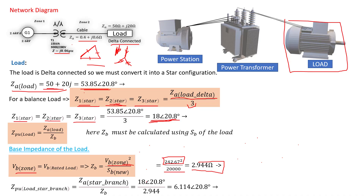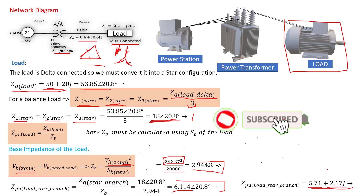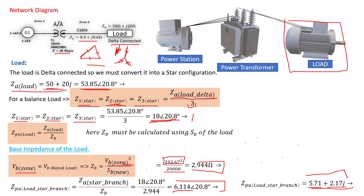Z per unit equals 18 at an angle of 20.8 degrees divided by 2.944, giving us 6.114 at an angle of 20.8 degrees. We then convert it into rectangular form, which lets us see how much is resistive and how much is inductive inside our load. For a motor load, the coil has its own resistance and inductance — that's why this illustration is important.